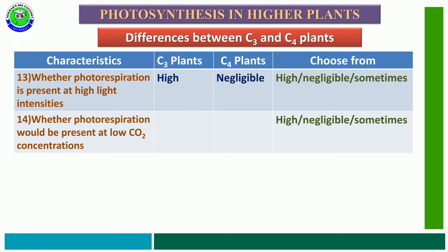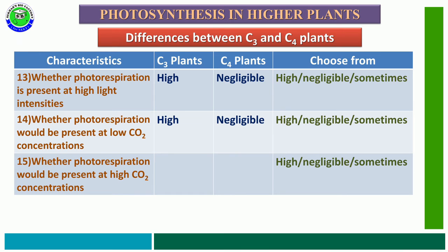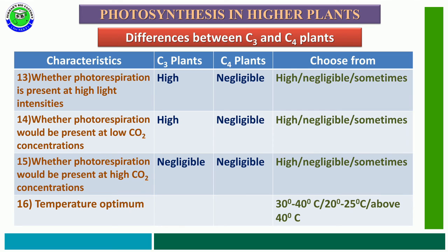The fourteenth characteristic feature is whether photorespiration would be present at low CO2 concentration. The given options are high, negligible, or sometimes. In C3 plants, at low CO2 concentration, photorespiration is high, but in C4 plants it is negligible. The fifteenth characteristic feature is whether photorespiration would be present at high CO2 concentration. The options are high, negligible, or sometimes. In both C3 and C4 plants, at high CO2 concentration, photorespiration is negligible.